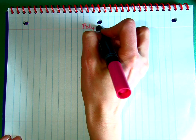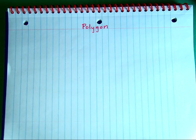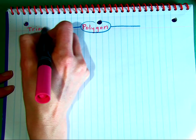Today we are going to make a polygon hierarchy. I'm going to start out by writing the word polygon at the very top of my paper. I know that polygons are made of two-dimensional figures. From the polygon, I'm going to create a branch for triangles and a branch for quadrilaterals. Triangles are three-sided figures and quadrilaterals are four-sided figures.